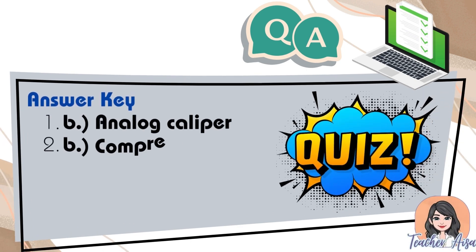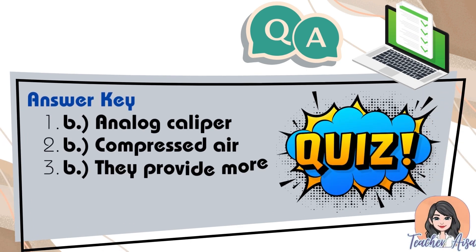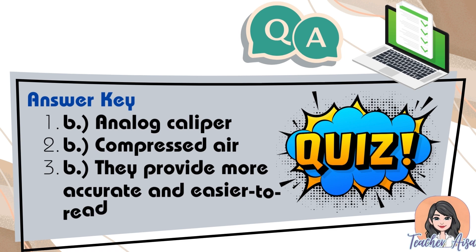Answers: one — B. analog caliper; two — B. compressed air; three — B. they provide more accurate and easier to read results.